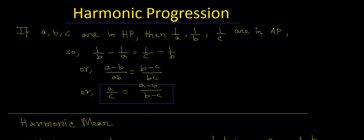1 by A, 1 by B and 1 by C are in AP. So we can write 1 by B minus 1 by A equal to 1 by C minus 1 by B.